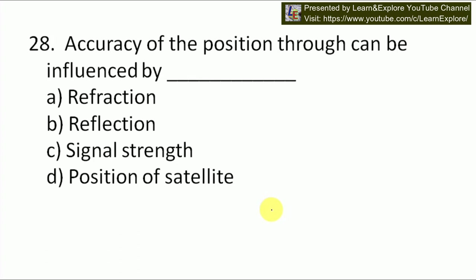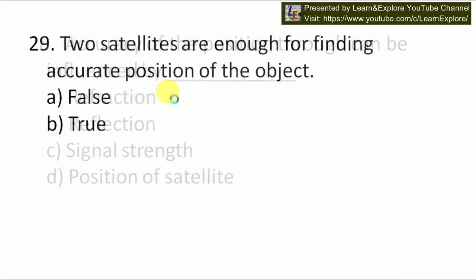Next question: accuracy of the position can be influenced by reflection, signal strength, or position of satellite. The accuracy of position can be influenced by position of satellite. There are certain factors which can affect GPS accuracy — position of satellite, atmospheric condition, satellite clock errors, and other errors. Among these, position of satellite influences accuracy. So our answer will be B.